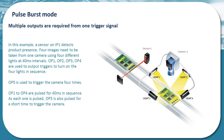Another mode option is pulse burst mode. This is used where a series of outputs are required in a set sequence following a product sensing trigger. Once sensor 1 has been made, a fast triggering process is initiated involving 4 lights and a camera which are turned on in sequence. In this case, triggering of each light is delayed by 40 ms. As each light is pulsed, another output is used to pulse the camera on each occasion.